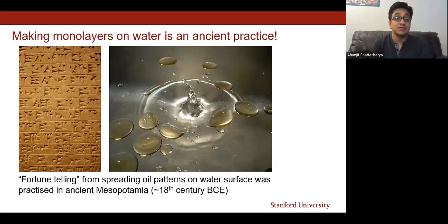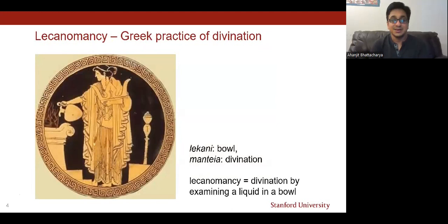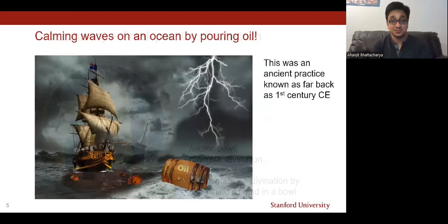The history of making monolayer films at the water surface is as ancient as humanity itself. Evidence of making oil films on water surface have been found from Babylonian clay tablets dating back to King Hammurabi's period in the 18th century BCE. However, it was not quite a scientific pursuit back then — those patterns on oil films were actually used for fortune-telling. About a thousand years later, Greeks adopted this practice and named it lykonomancy, which literally means divination by examining a liquid in a bowl.